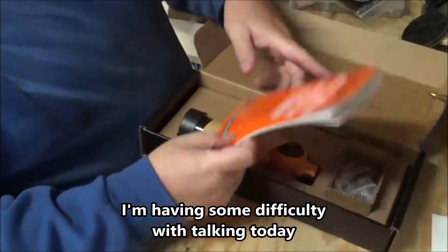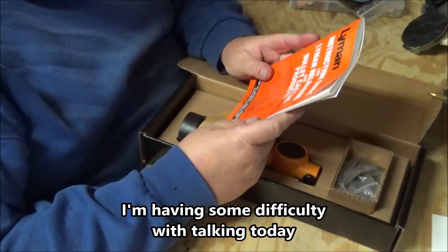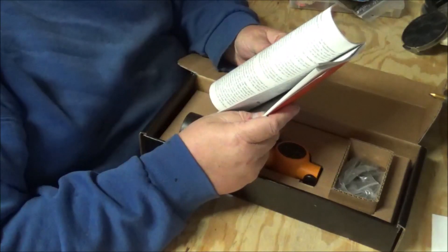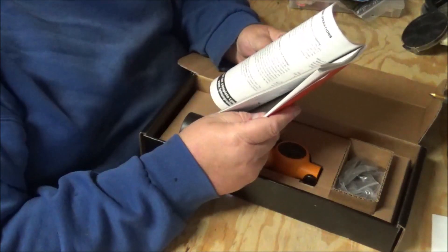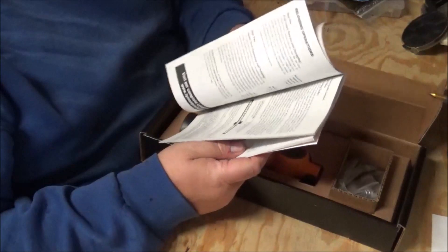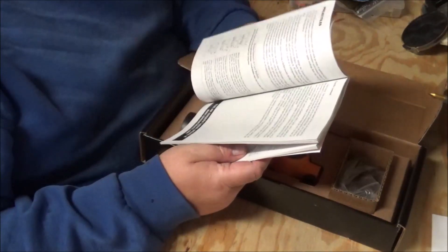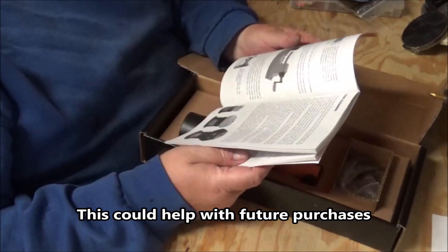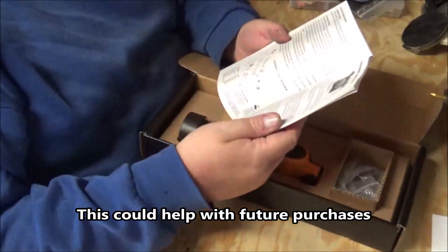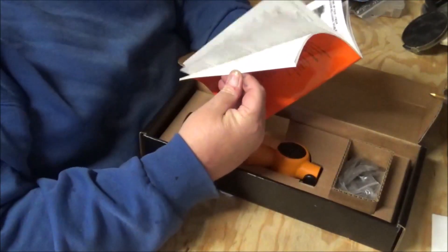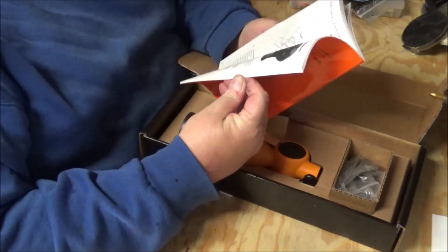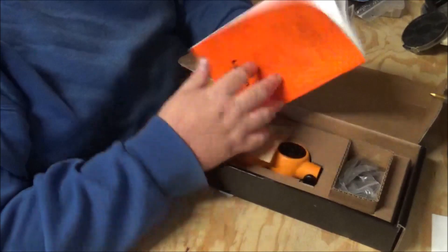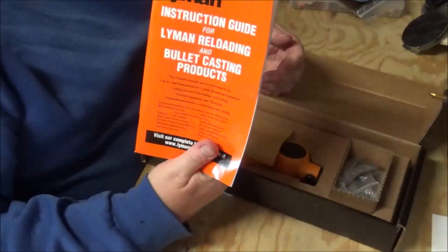Get the manual. Looks like this is just the guide for all their different products - scales, measures - tells you about powder, bullet molds, both of their powder measures. Yeah, it's got pretty much everything you need to know in there.